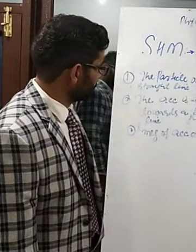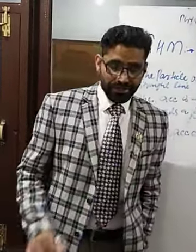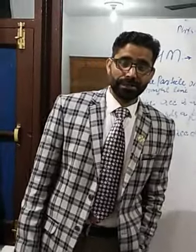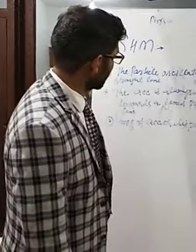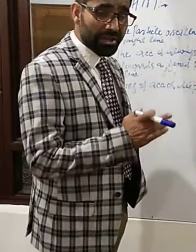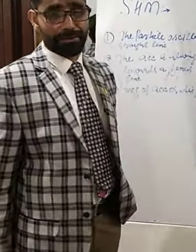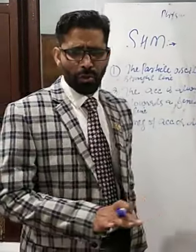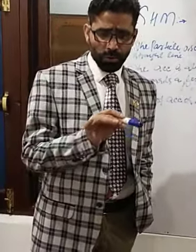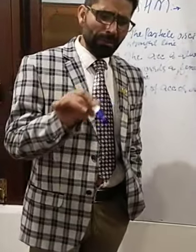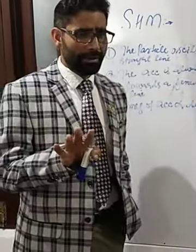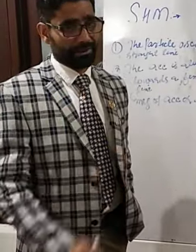As-salamu alaykum wa rahmatullahi wabarakatuh. In the last lecture, we discussed periodic motion as well as oscillatory motion. Periodic motion is that motion which repeats after equal intervals of time, but there is no restriction of the path — the path may be to and fro or circular. So in periodic motion, you have to remember that it should repeat after equal intervals of time.